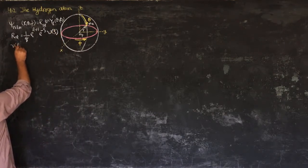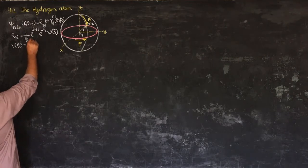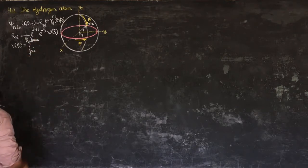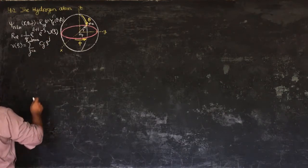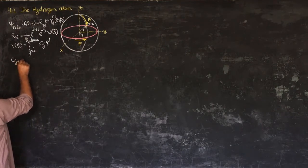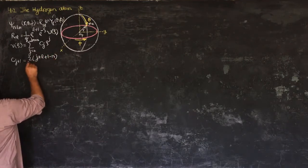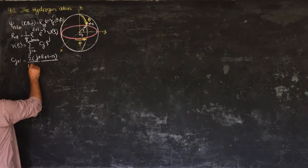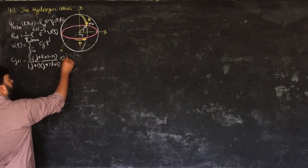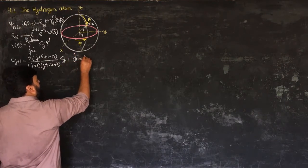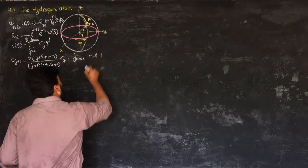Here ν(ρ) equals the summation on j from 0 to j_max of c_j · ρ^j. The recursion relation is: c_(j+1) = [2(j + l + 1) − n] / [(j + 1)(j + 2l + 2)] · c_j.